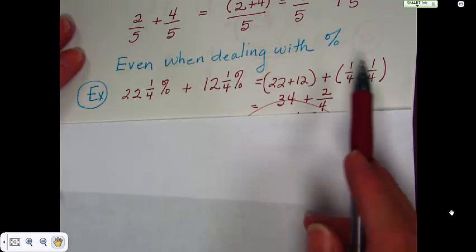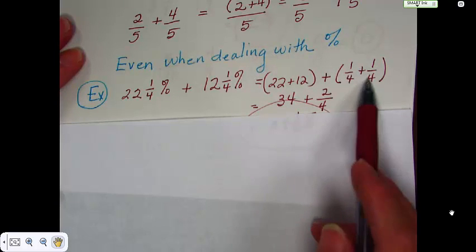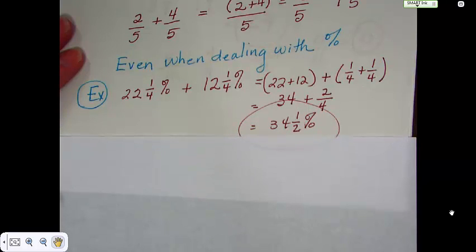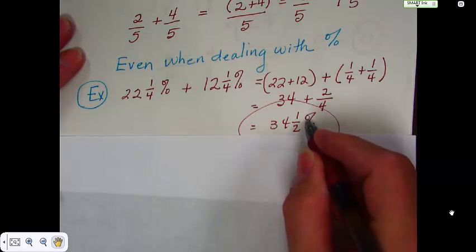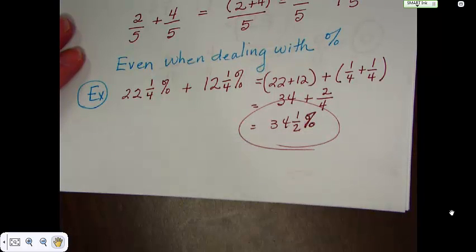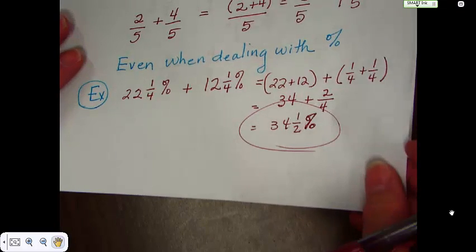And we end up with 22 plus 12, which is 34. And 1 plus 1 over the 4 is 2 over 4. And, of course, you can reduce that 2 over 4 to 1 half. And remember, if you're working with percents, you've got to add that percent sign. I think that's pretty clear. I don't think that's too much of a stretch for you guys.